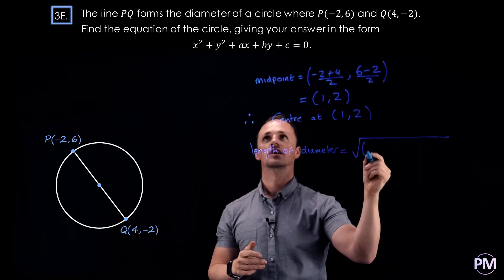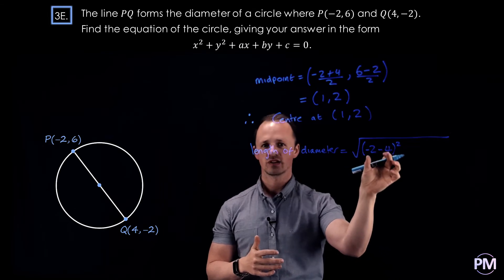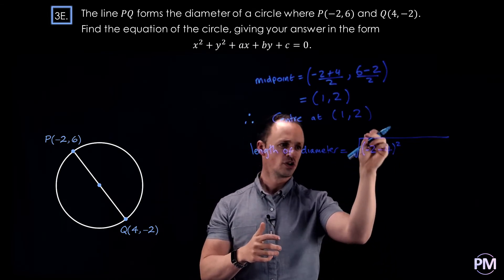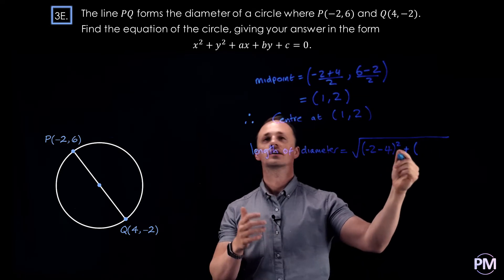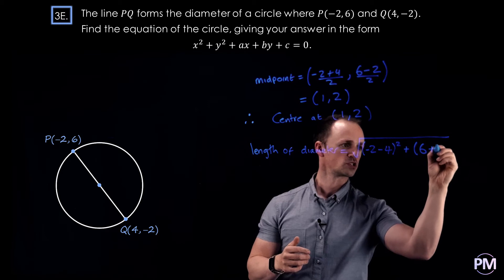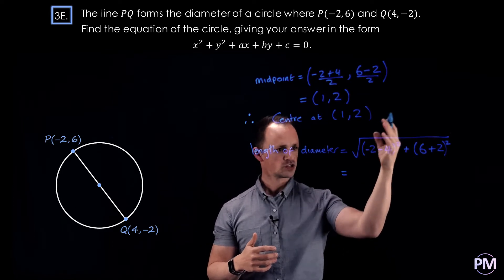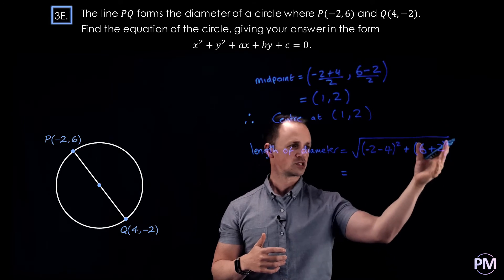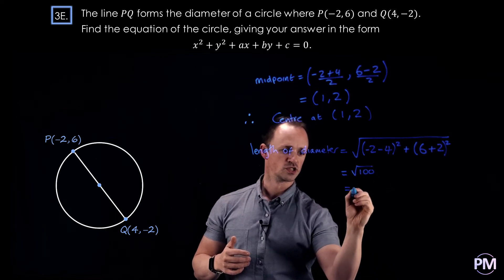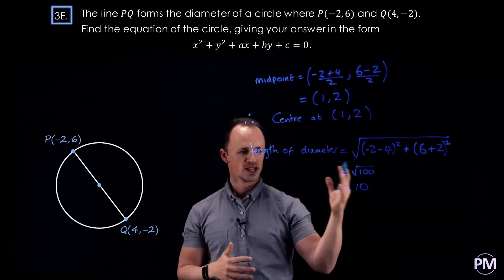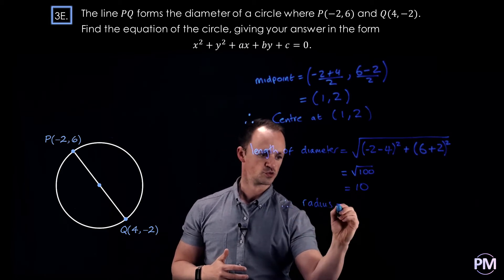We do the difference between the x coordinates all squared: minus 2 minus 4, all squared. It doesn't matter which way round you do this as long as you're consistent — first x minus second x, and first y minus second y. So 6 minus minus 2 becomes 6 plus 2, all squared. Minus 2 minus 4 is minus 6, squared gives 36. 6 plus 2 squared is 64. So we get the square root of 36 plus 64, which is the square root of 100, which is 10. The diameter is 10, so the radius must be 5.